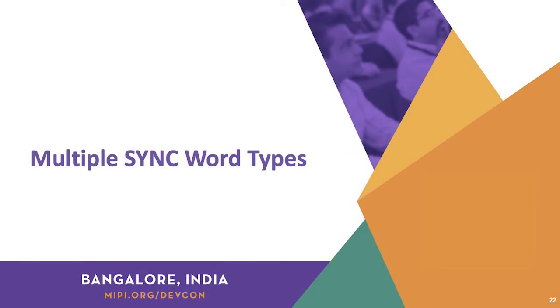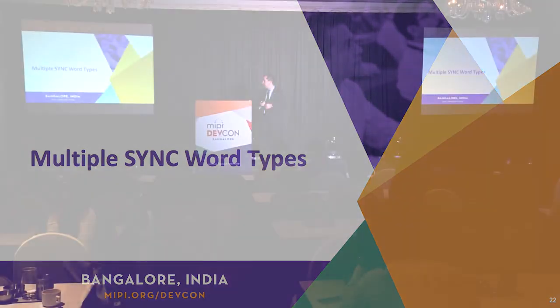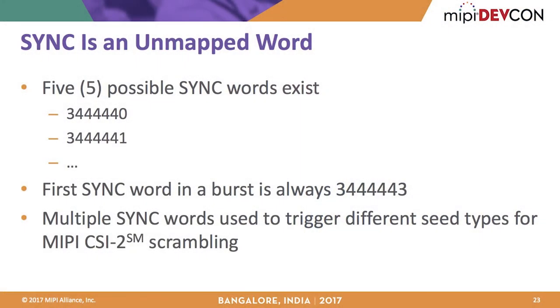Another feature of next-gen C-PHY is the number of sync words. Sync is unmapped, and there's actually a possibility to create several of them. The one seen so far — the number ending in three — is the sync word, but there's actually a series of them available that could be used for enhanced scrambling capability and better noise immunity.